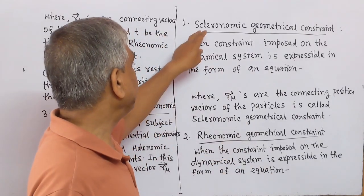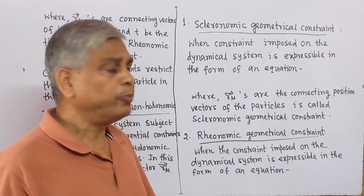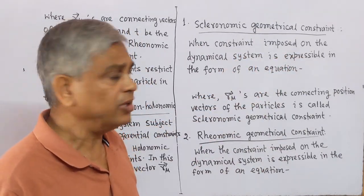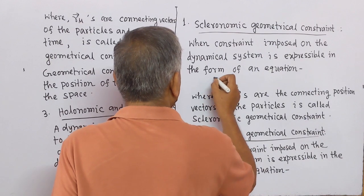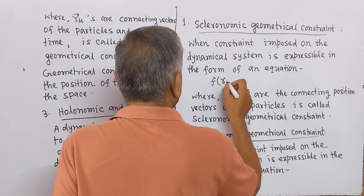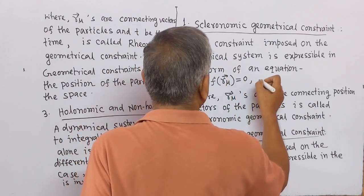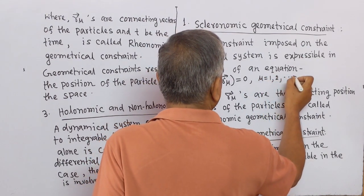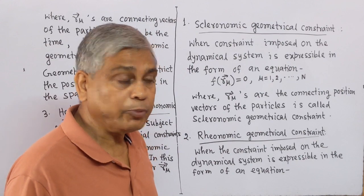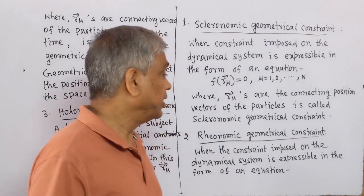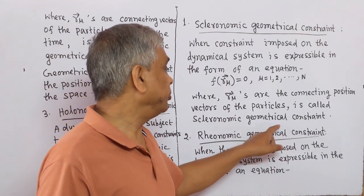Number 1: Scleronomic geometrical constraint. When the constraint imposed on the dynamical system is expressible in the form of an equation — function F of R_mu equal to 0, where mu equals 1, 2, ..., n — and where R_mu's are the position vectors of the particles, then the system is called a scleronomic geometrical constraint.